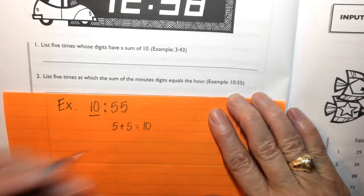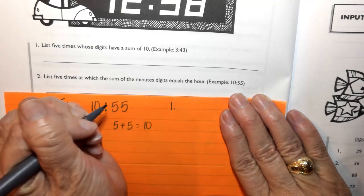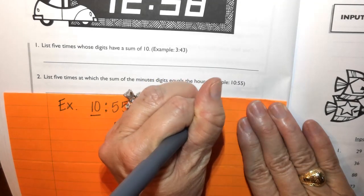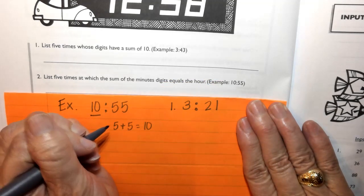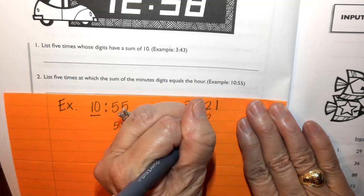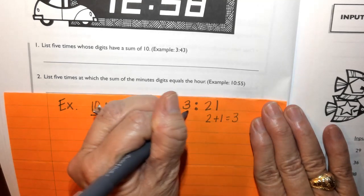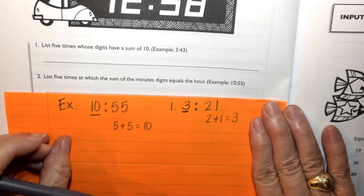Another example might be 3:21, because if I separate the 2 and the 1, that will give me 3, and that happens to be our hour of time.